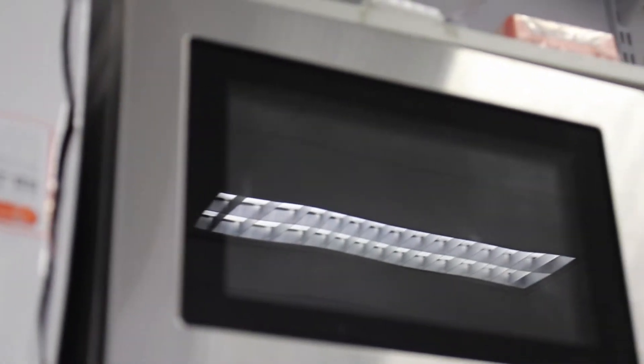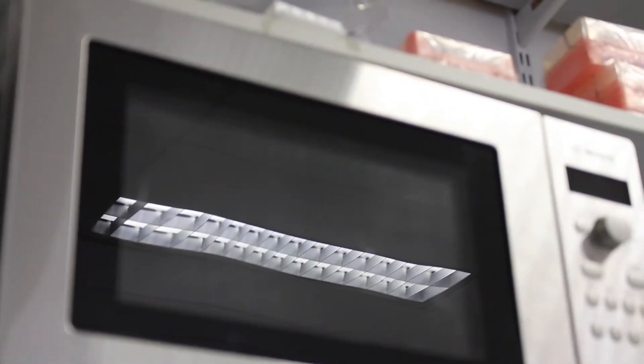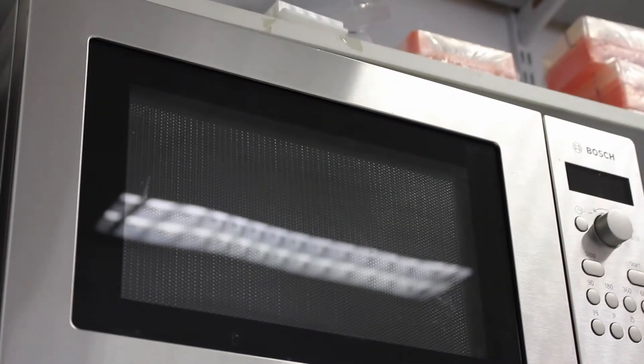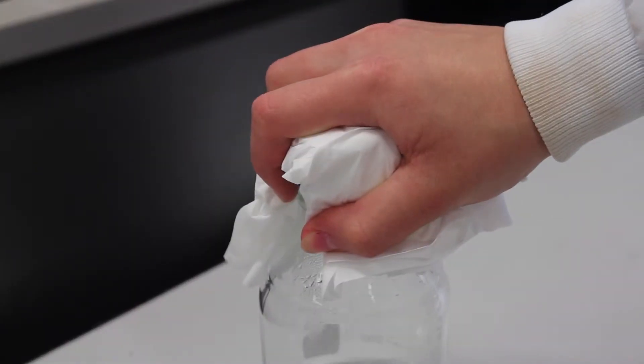The mixture is microwaved for a few minutes. It is important not to boil the solution out of the flask. The flask at this stage is extremely hot. A folded piece of paper is used in order to handle the flask as shown.